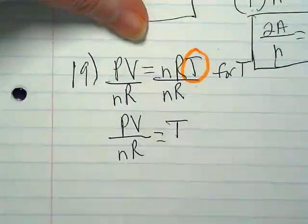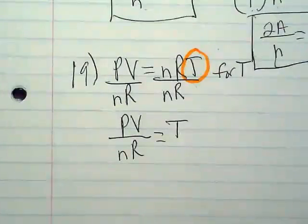Over. And my answer is POV over NR equals T. Is this clarifying for some people or validating that you were doing things the right way? Yep. That's what we want. Okay.